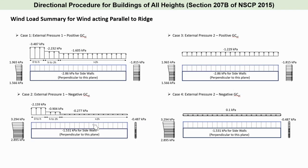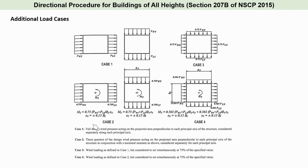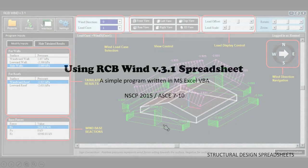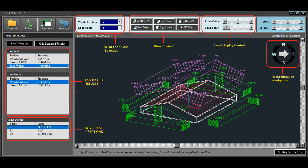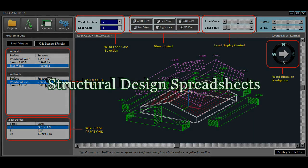Displaying the wind load summary for wind acting parallel to ridge. In addition to our directional wind load cases, the following cases should also be applied to consider all other wind directions not normal nor parallel to the ridge. That concludes our manual calculation. In the second part of this module, we will use a spreadsheet called RCB Wind Version 3.1 to calculate the structure's design wind loads. Thanks for watching.